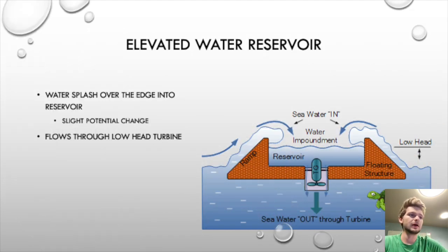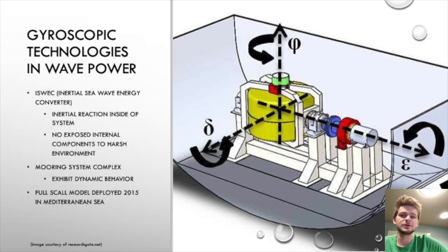We'll now move on to elevated water reservoirs. This one is probably perhaps the most intuitive system because water splashes up—as you can see in this figure—over the sides of this container into the elevated chamber. This elevated chamber now has some of the converted potential energy of the waves and it flows through a low head turbine, because there's not too much pressure since this is not elevated so high above the rest of the water. It's just a slight amount—not necessarily the best or most efficient system, but it is a very interesting and intuitive system to think about.